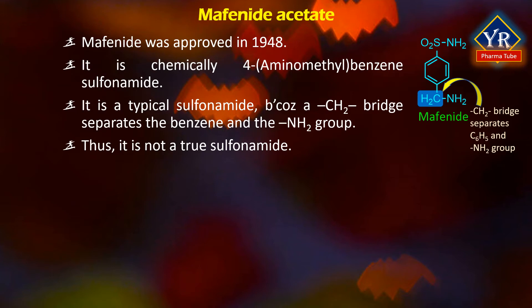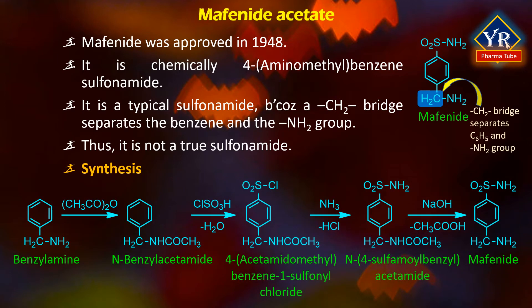Its antibacterial action involves a mechanism that differs from that of the true sulfonamide type of compounds. Mafenide is synthesized from benzyl amine. Benzyl amine initially reacts with acetic anhydride to form N-benzyl acetamide, subsequent reaction of which with chlorosulphonic acid and then with ammonia gives 4-acetamidomethylbenzene sulfonamide. Hydrolyzing this product with a base such as sodium hydroxide gives mafenide.